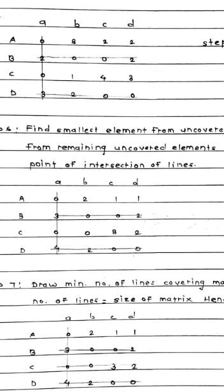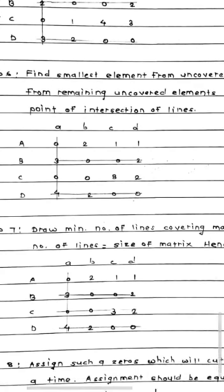Now comes the last step: again, you have to draw minimum number of lines which will cover maximum number of zeros. Now in this case, you just have a trial and error method at home when you are practicing. So in this case, if you see the number of lines is 4 which is equal to size of matrix. So the allocation is being done.